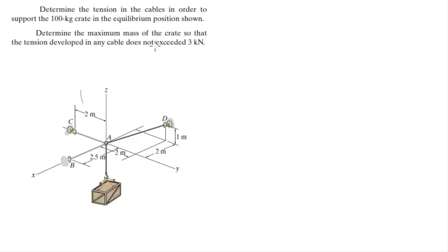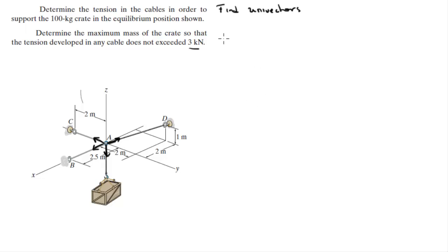On the second problem, they want you to find the maximum mass of the crate if the tension on the cables cannot exceed 3kN. The first thing we need to do is find the unit vectors. There are four: one going from A to D, one going from A to C, one going from A to B, and one going straight down towards the crate. To do that, we're going to find the points involved.